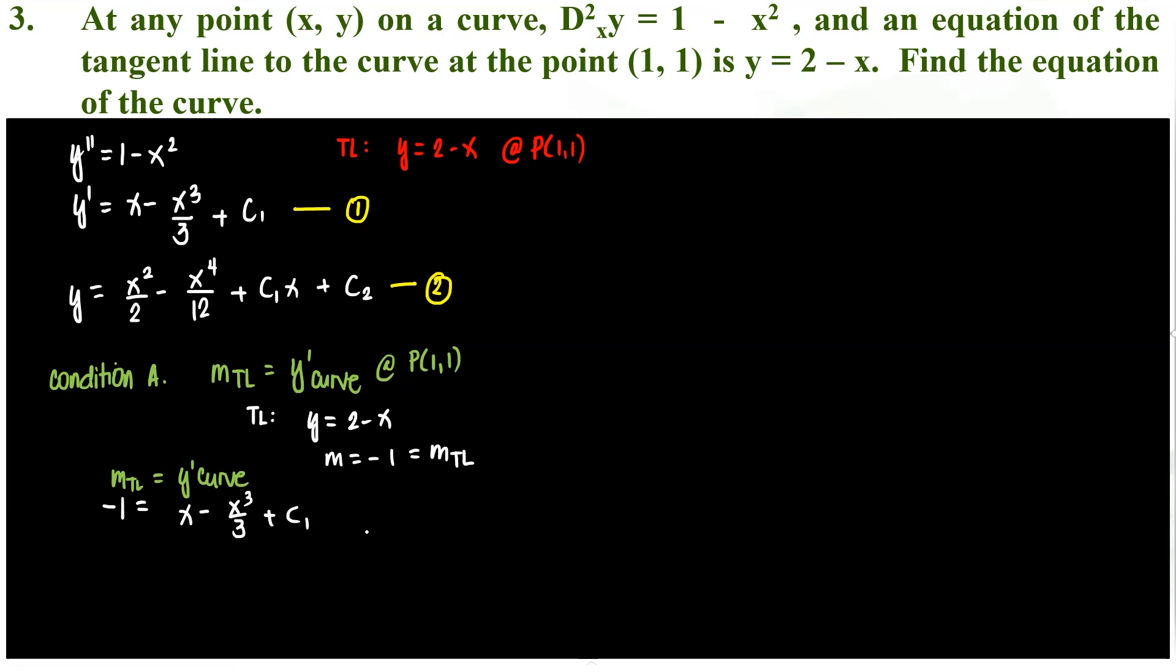When does this happen again? At 0,1,1. So at 0,1,1, negative 1 equals 1 minus 1 third plus c1. What is c1? Negative 2 plus 1 third. So negative 2 is negative 6 thirds plus 1 third. That's negative 5 over 3. One condition we've used. So maybe what we can say here is using equation 2, let's put it back to 2 so there will be less unknowns. x squared over 2 minus x to the 4 over 12. Here we'll put the c1. The c1 that we were able to solve for is negative 5 thirds. So negative 5 thirds x plus c2. So now we only have one unknown, c2.